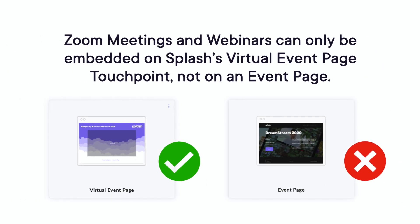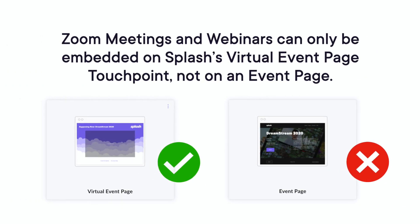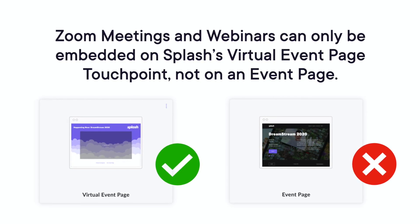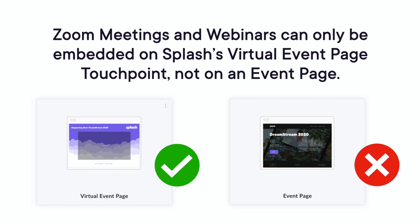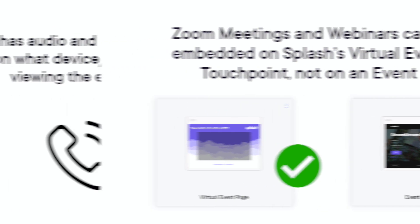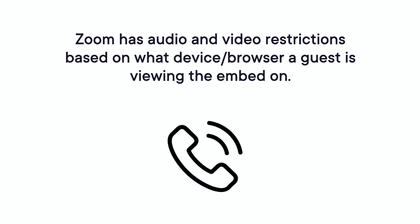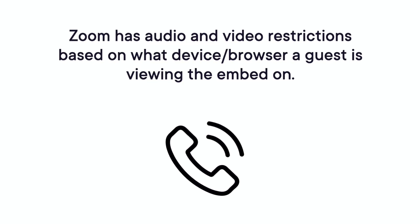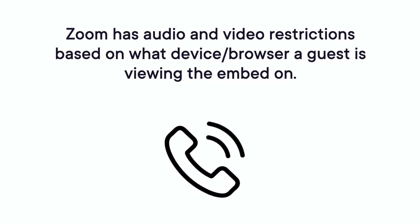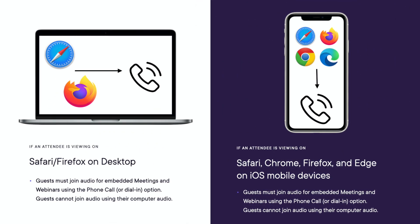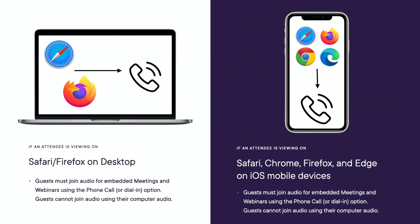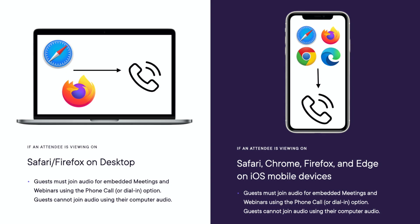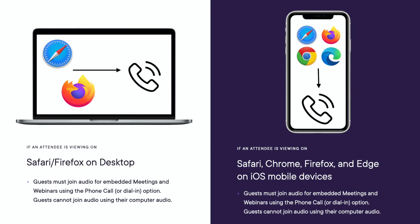Here are some things to know before we begin. At the time of this recording, Zoom meetings and Zoom webinars can only be embedded on Splash's virtual event page touchpoint, not on an actual event page. Zoom has audio and video restrictions based on what device or browser a guest is viewing the embed on. If the attendee is viewing via Safari or Firefox on desktop, guests must join audio for embedded meetings and webinars using the phone call or dial-in option.